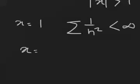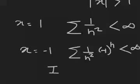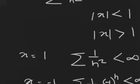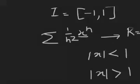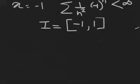And if you consider the other endpoint, x equals negative 1, you also get a convergent series. Therefore the interval of convergence of that power series is the closed interval from negative 1 to positive 1, [-1, 1]. You can change the radius by changing the denominator. If you change this number to 10, then for that power series the interval of convergence becomes [-10, 10]. I hope you understood this.